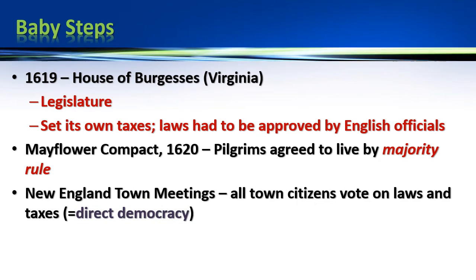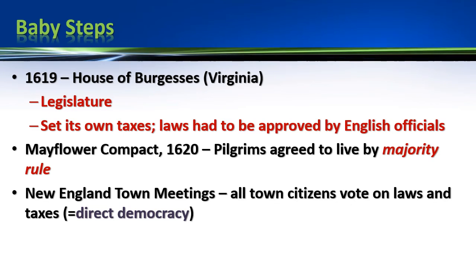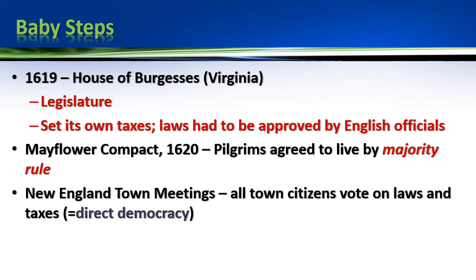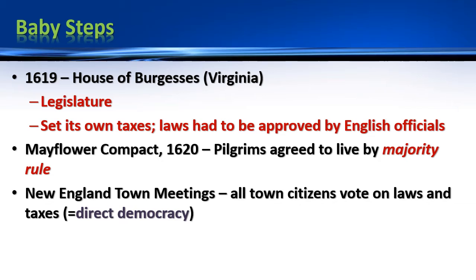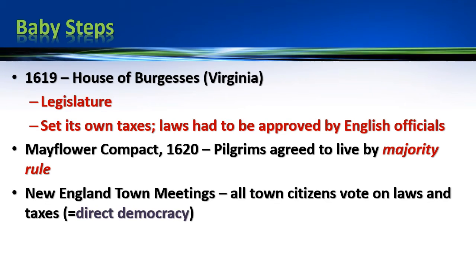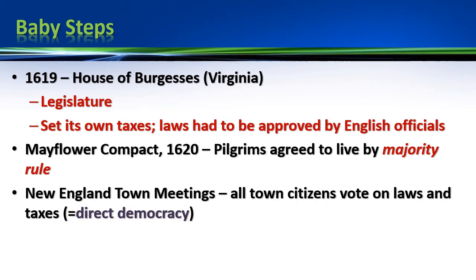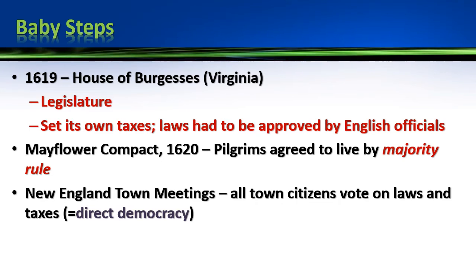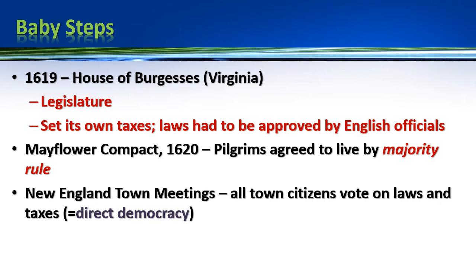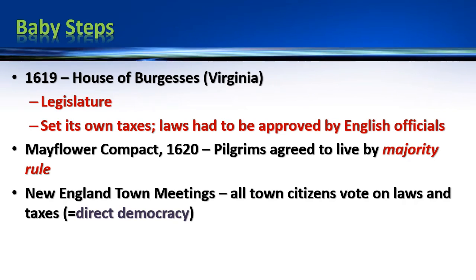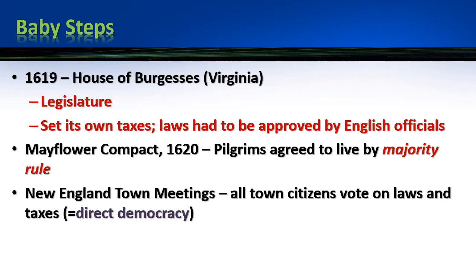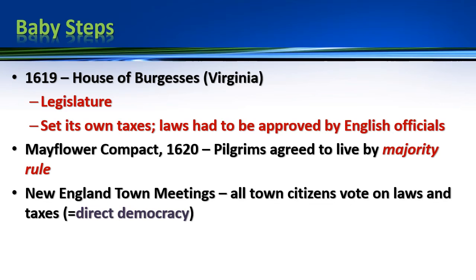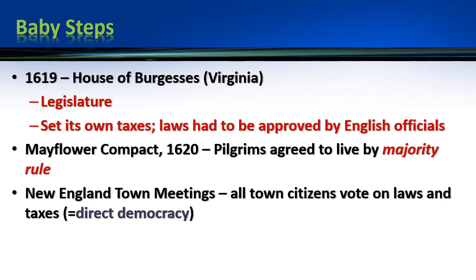In New England — Massachusetts and Connecticut — there is a very democratic kind of government structure called the town meeting, where all citizens in the town get to vote on the laws and taxes the town will pay. This is an example of direct democracy, when the people have a direct voice in their government. Note that 'citizens' here means Puritans — you have to be a converted member of the Puritan church. Otherwise, you're not a citizen, and this did not include women either. So really, even though this is pretty democratic, it's white male church members making these decisions.